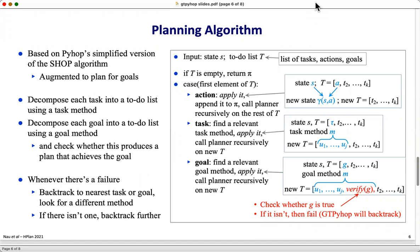Whenever there's any kind of a failure, GTPyHop backtracks to the nearest task or goal in order to look for a different method, and if there isn't a different method for that task or goal, then it backtracks even further.